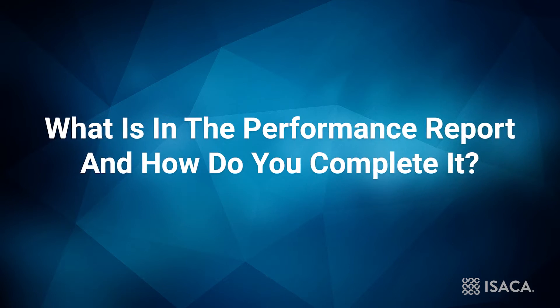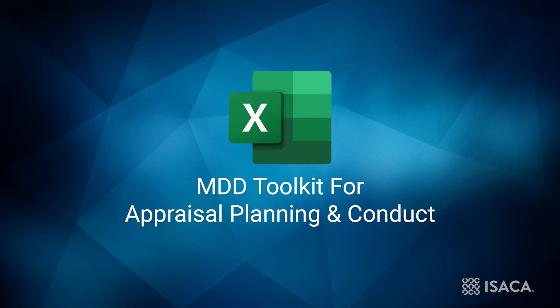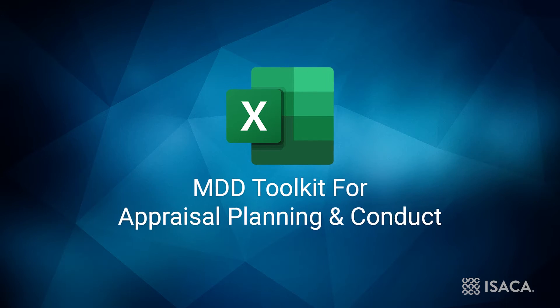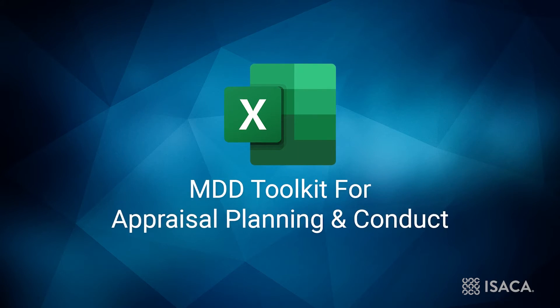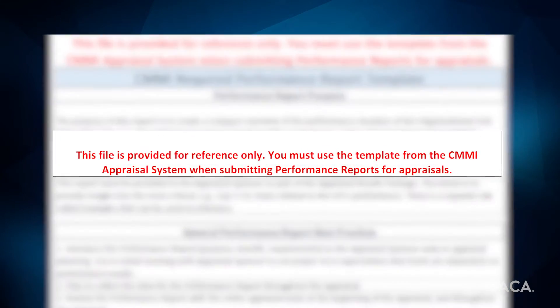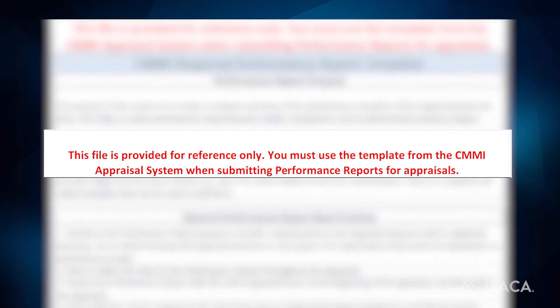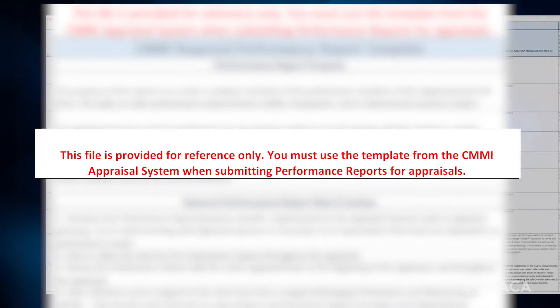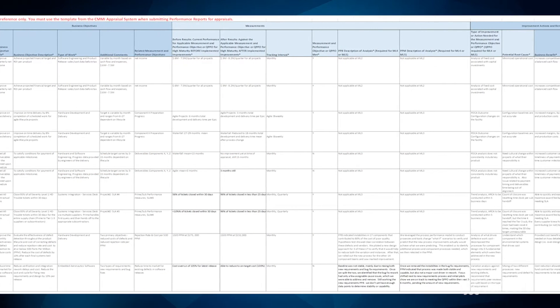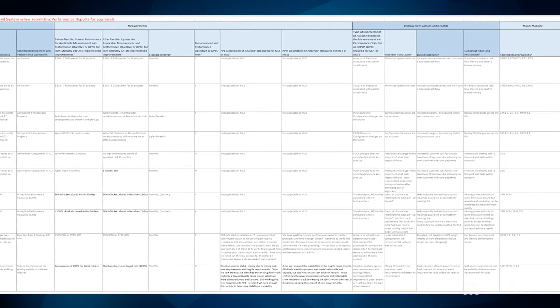So, what is in the Performance Report and how does one complete it? Let's start by looking at the format of the report. You will find a template for the Performance Report in the MDD Toolkit for Appraisal Planning and Conduct. While it is useful to use the template when instructing appraisal teams and providing organizations early visibility of a report, please make sure you use the template obtained from within the CMMI appraisal system itself when providing an actual report. Also found in the MDD Toolkit is something called the Practical Guide to the Performance Report, which provides basic guidance on completion of this report. You may want to download and refer to it as you listen.